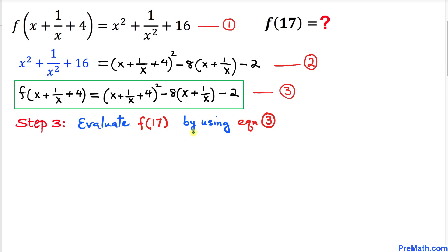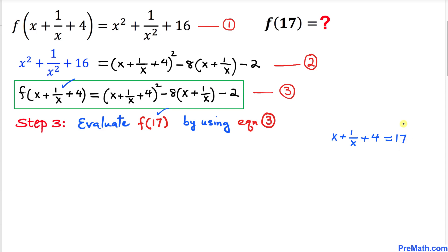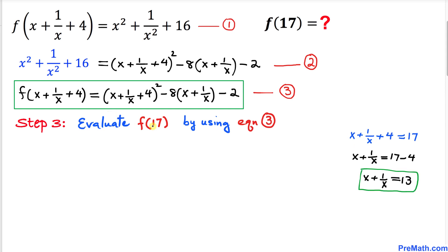Now for our final step, let's evaluate f of 17 using equation 3. That means x + 1/x + 4 = 17. Moving 4 to the other side gives x + 1/x = 17 − 4, so x + 1/x = 13.